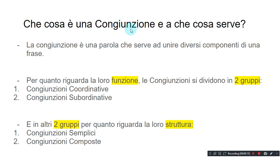Che cosa è una congiunzione e a che cosa serve? What is a conjunction and what function does it have inside a sentence? La congiunzione è una parola che serve ad unire diversi componenti di una frase. The conjunction is a word that connects different components of a sentence.